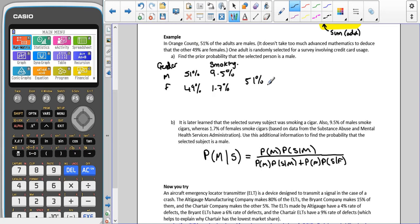Now all of these are actually already written down here. We're just going to substitute them into the correct place. So the probability that someone is male is 0.51, times the probability that someone is a smoker, given that they are male, which is 0.095, divided by the probability that someone is male, which is 0.51, times the probability that someone is a smoker, given that they're male, which is 0.095, plus the probability that they are female, which is 0.49, times the probability that they are a smoker, given that they are female, which is 0.017.